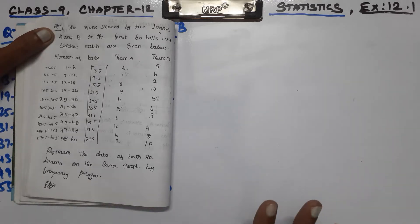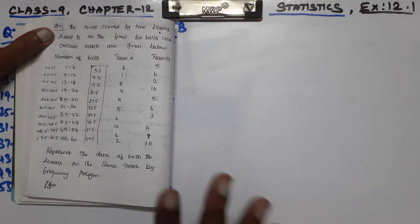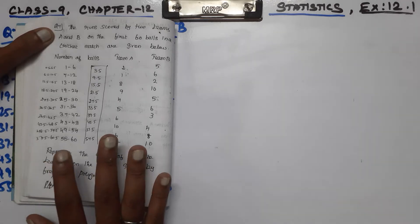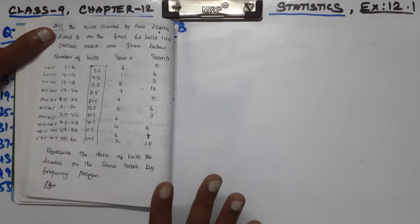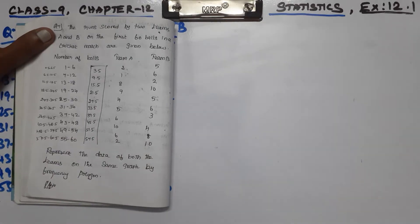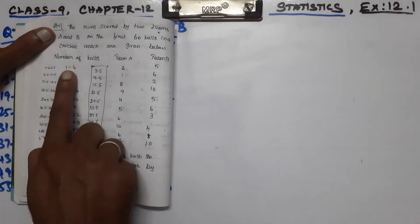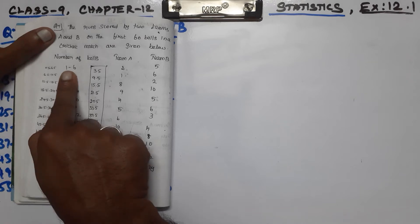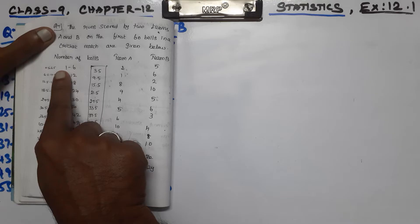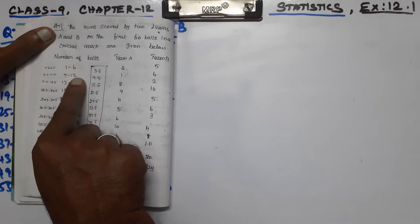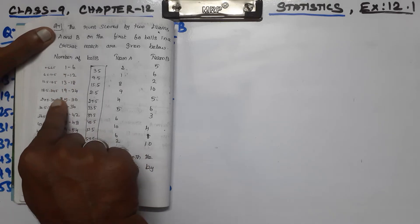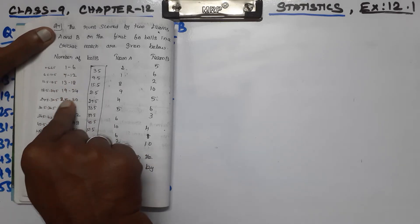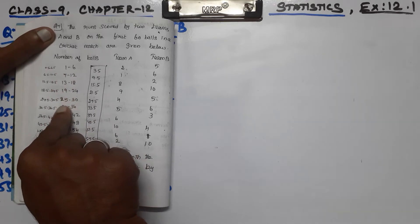When we go to the graph sheet, we will set it up. In the graph sheet, we are going to talk about the intervals: 1 to 6, 7 to 12, 13 to 18, 19 to 24, and 25 to 30.